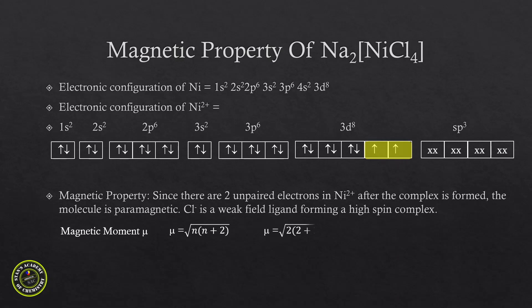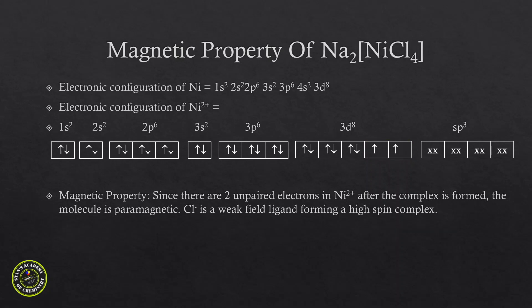Calculating the magnetic moment: there are 2 unpaired electrons, so μ = √(n(n+2)) = √(2×4) = √8 = 2.828 Bohr magneton. This is in accordance with observation — measuring the magnetic moment with an instrument gives approximately 2.828 Bohr magneton. This completes the lesson on coordination compounds. There are two parts; the first video has already been posted, and this is the second part.